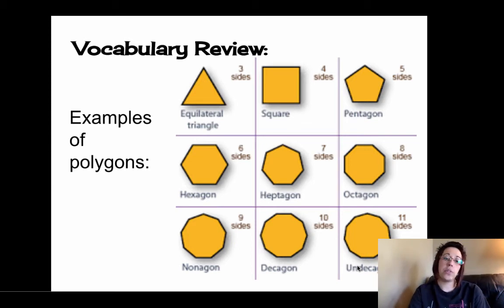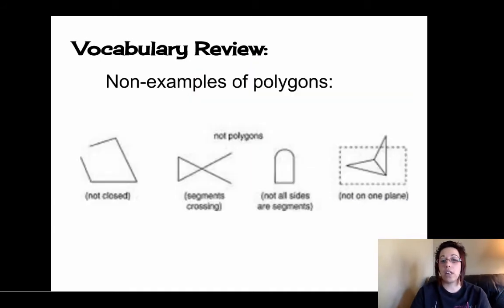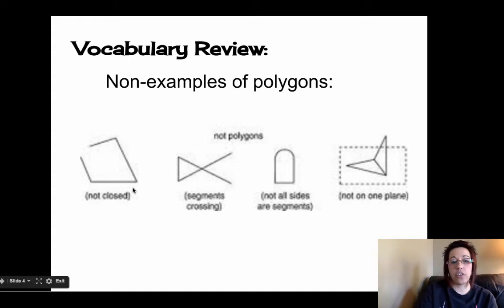So now that you have some examples down, let's look at some non-examples of polygons. The first one, this figure over here is definitely composed of line segments, but it's not closed. It has this hole up here at top. Our second non-example is definitely made up of line segments, but those line segments cross. That causes it to not be a polygon.